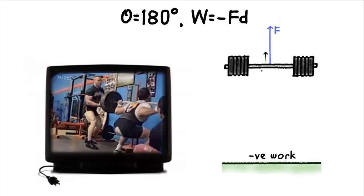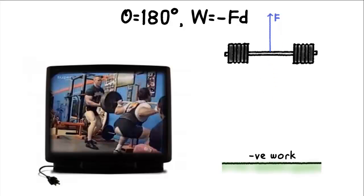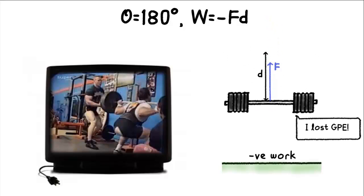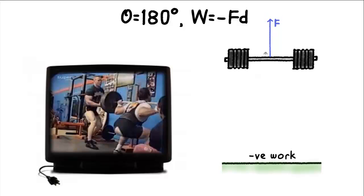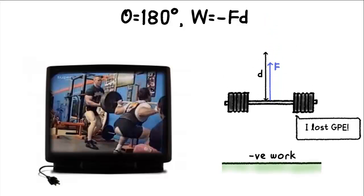Another way to see that work done is negative is this: if not for this upward force, the barbell would have been free falling and accumulating KE on the way down.